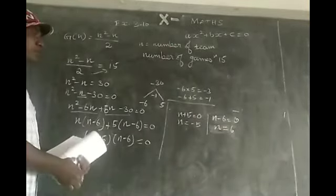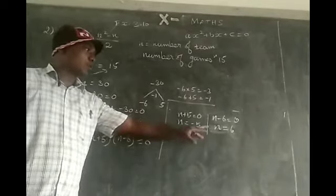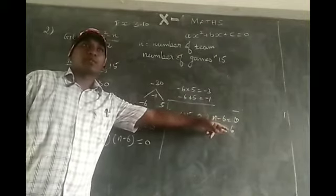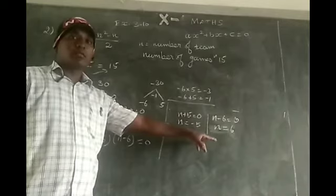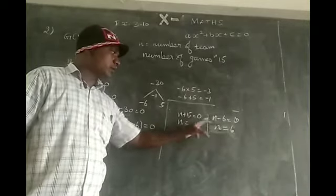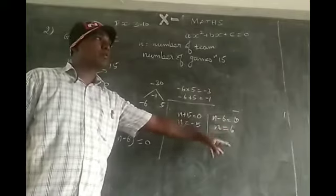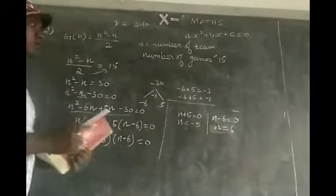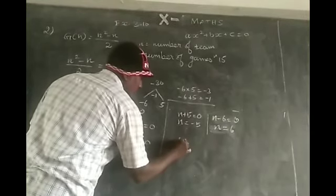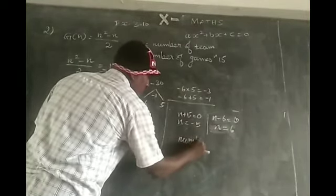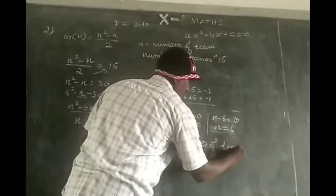So which is positive? Number of teams is 5 teams, so minus 5 is negative. Or number of teams is plus 6, which is positive. Counting is positive. There are two possibilities.